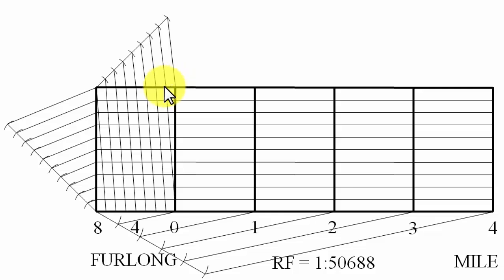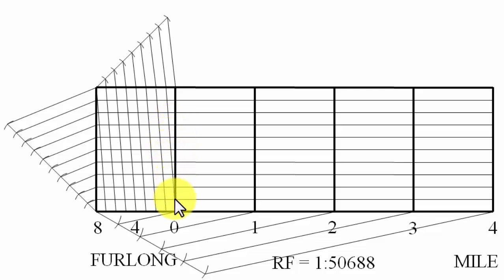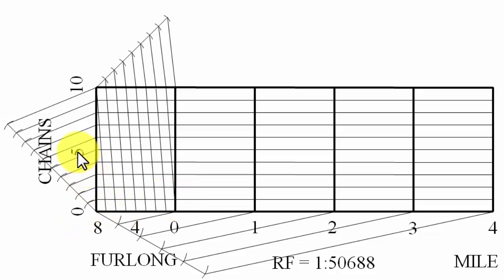This one-furlong horizontal span also represents ten chains, so counting down from the top: nine chains, eight, seven, six, five, four, three, two, one. We label the vertical axis: zero at the bottom, five chains in the middle, and ten chains at the top. That is the chain sub-sub-unit. The construction of the diagonal scale is now complete.